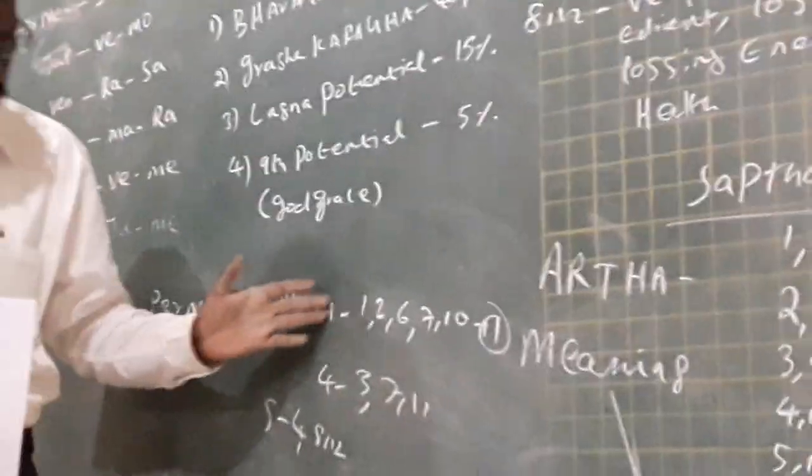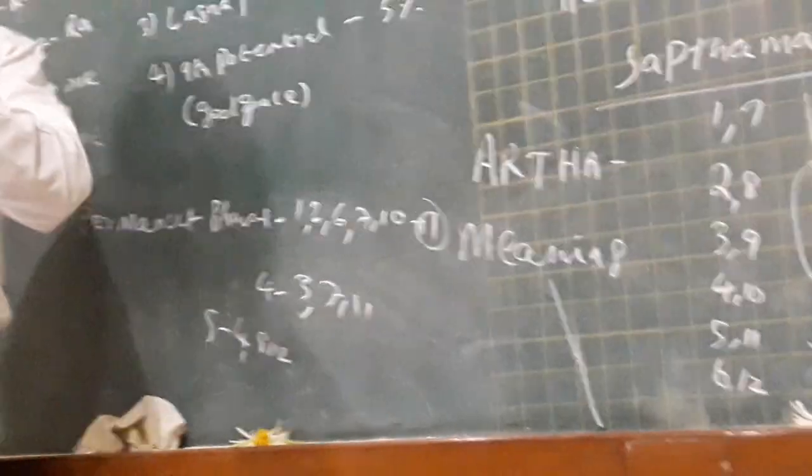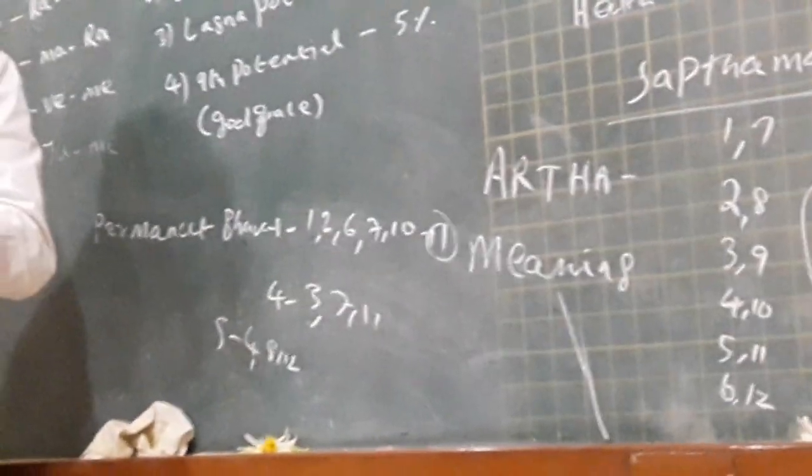But permanent bhava, karaka, is always here running. All the ages it is running. Therefore, this potential does not damage.